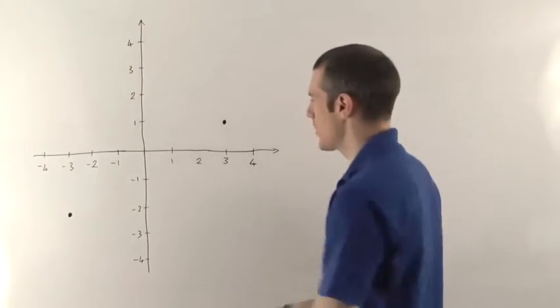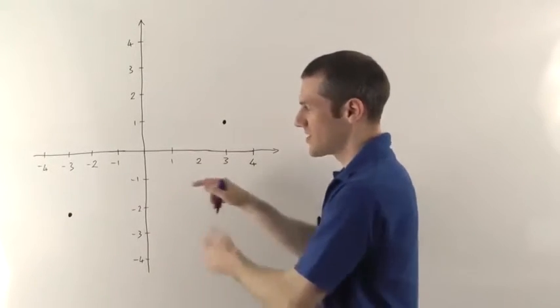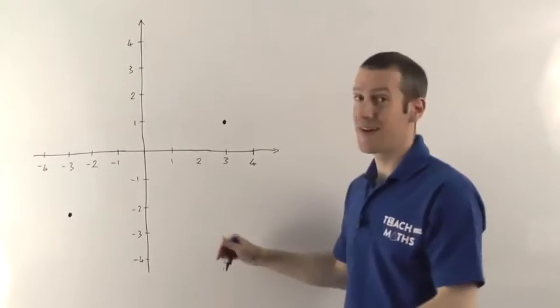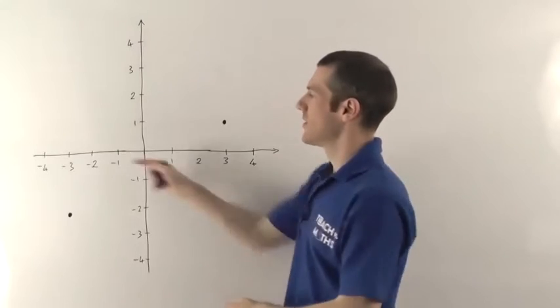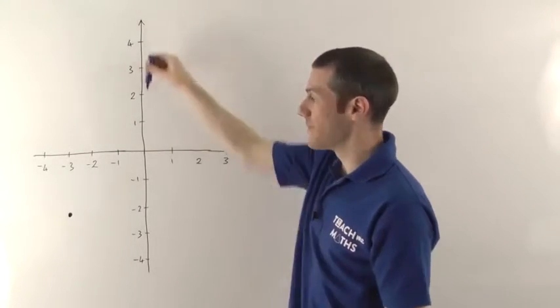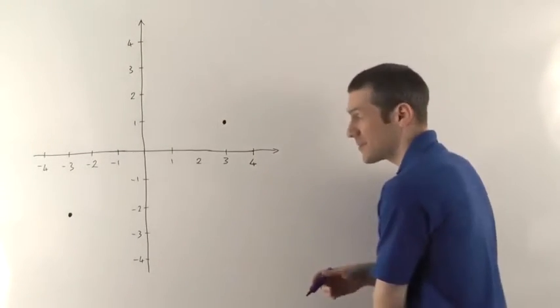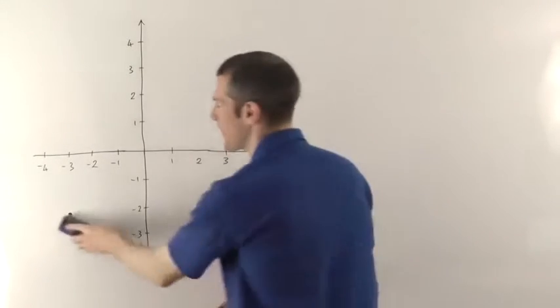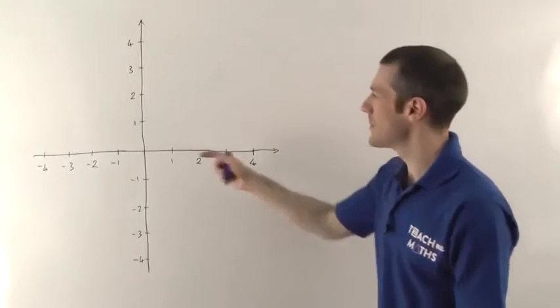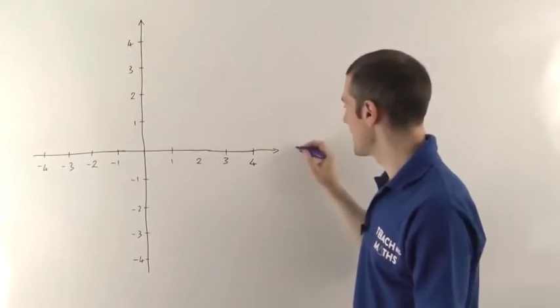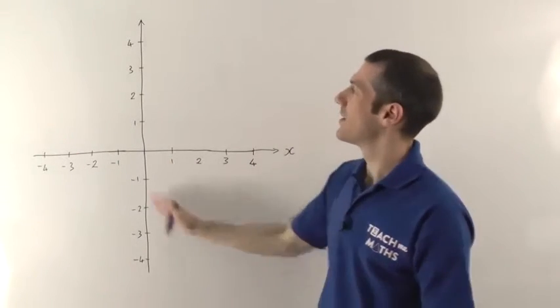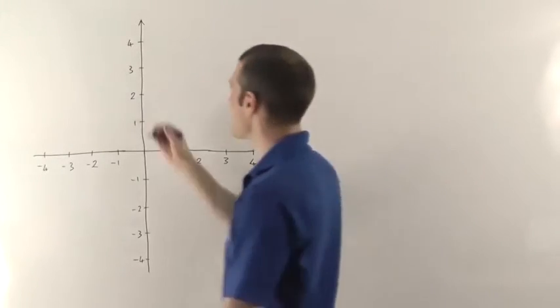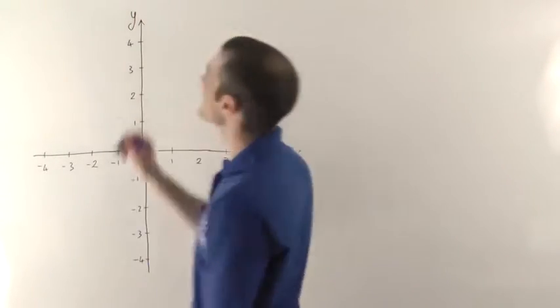But it's a bit confusing when you've got two different number lines, which number line is which. We need some way of labelling them, of identifying the horizontal number line from the vertical number line. Now you can give them any label you like, really, but in maths we always like to be consistent, and so we always label the horizontal number line x. And the vertical number line, probably know by now, is going to be y.